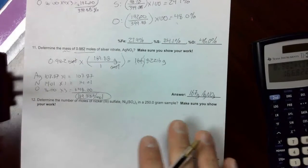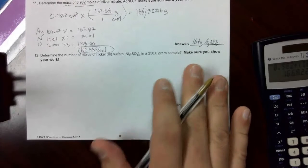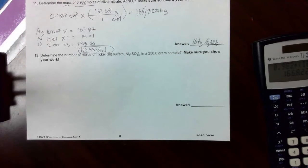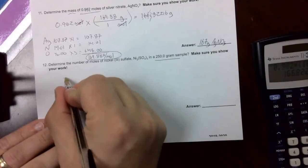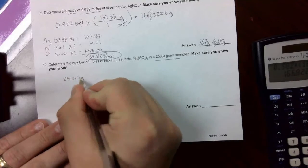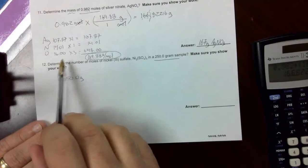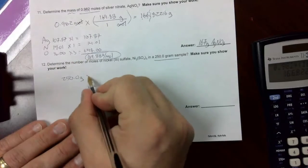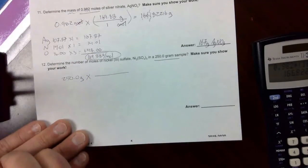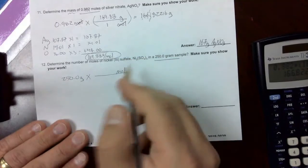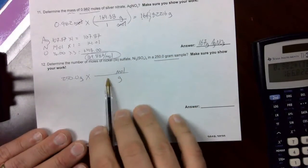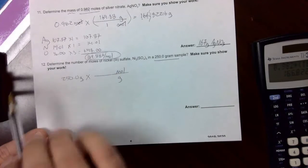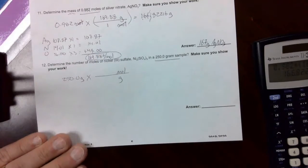One more for us. The last problem here. We're going to determine the number of moles in nickel sulfate in a 250-gram sample. So we start by writing down what they give us, 250.0 grams. We need to convert that to moles. That's why it says determine the number of moles. So we set up our conversion. Times and a line. We want to find mole that goes on top. We need to get rid of grams that goes on bottom. But we don't have anything to put into this fraction. So just like in the last one, we had to figure out the formula mass. We've got to do the same thing here.